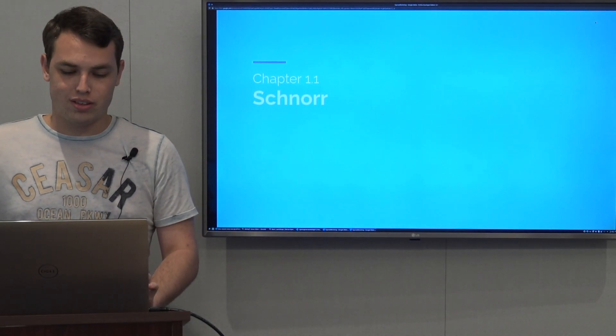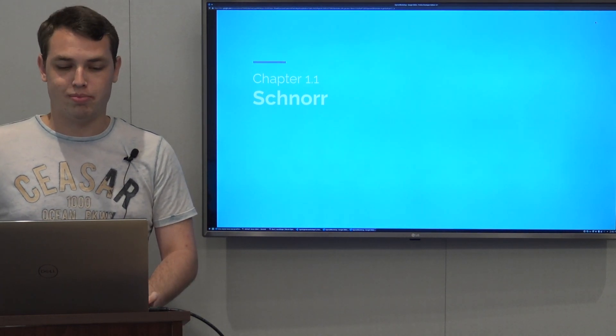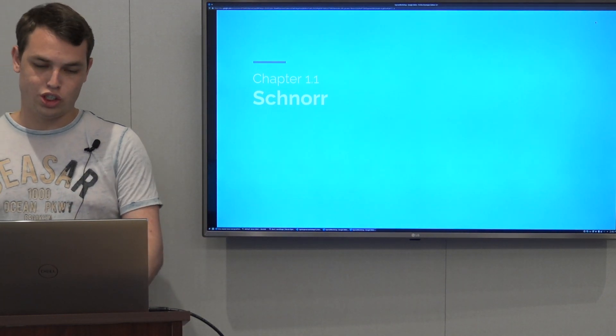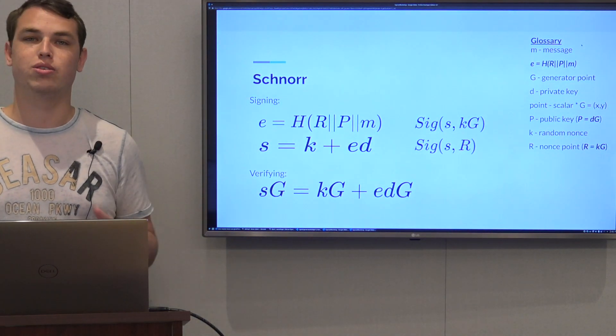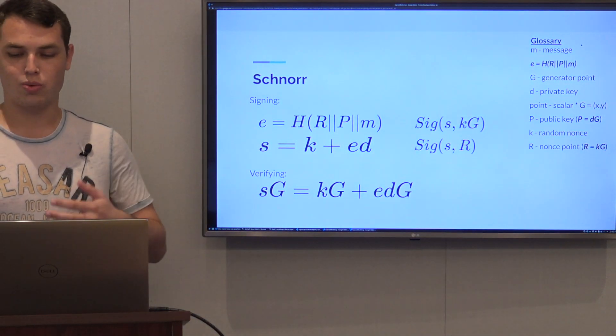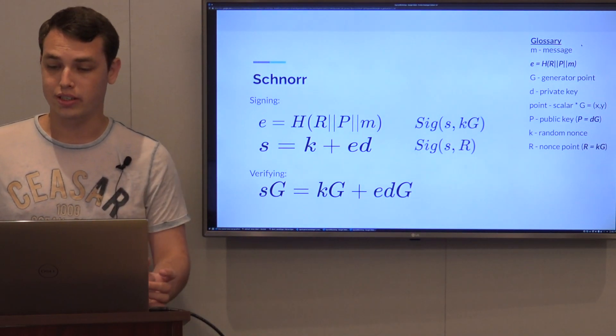Okay, now that we're done with the elliptic curve math, let's look at what is actually Schnorr signatures. We have a glossary here to help us remember stuff. M is a message, E is the hash of the message and some other stuff which we'll go over soon, G is the generator point.